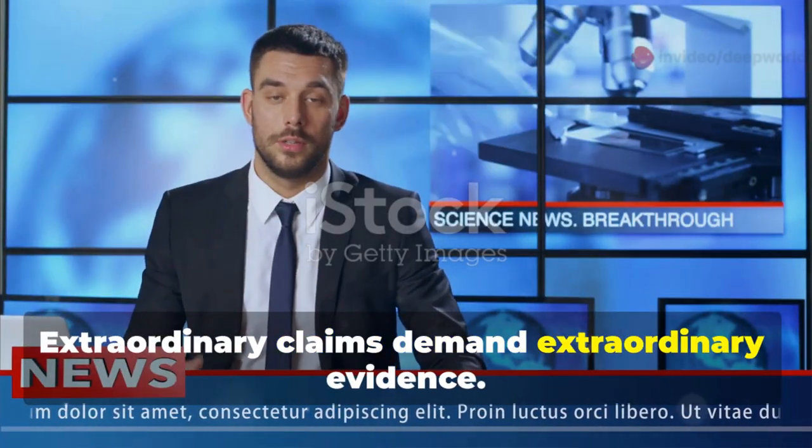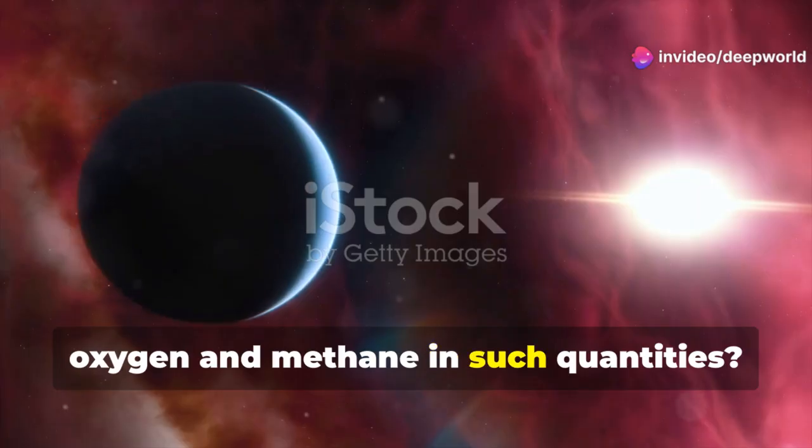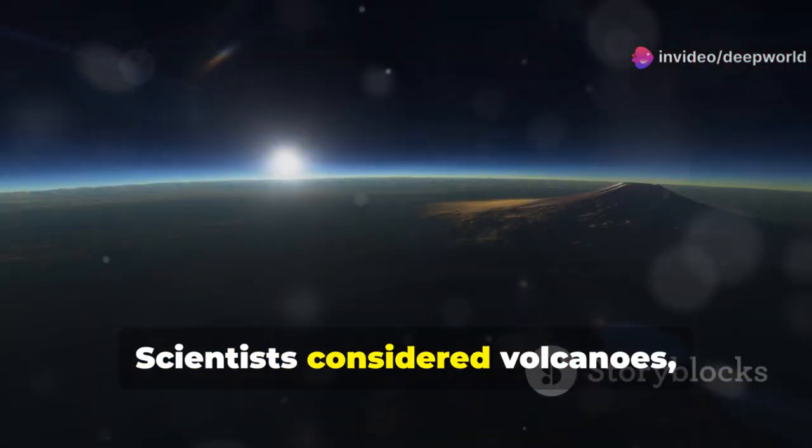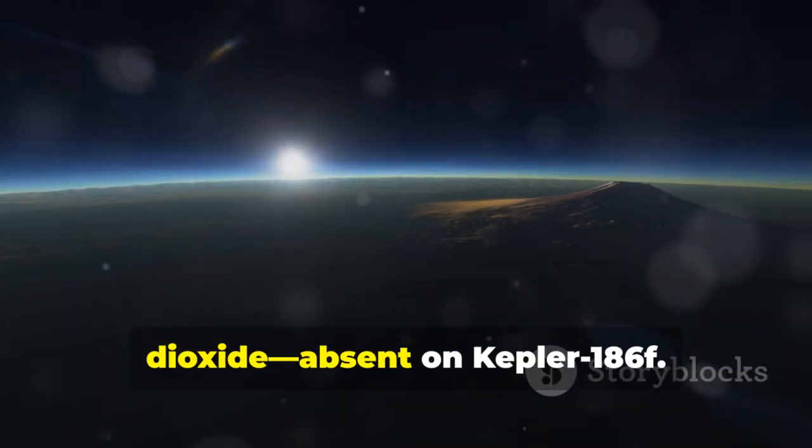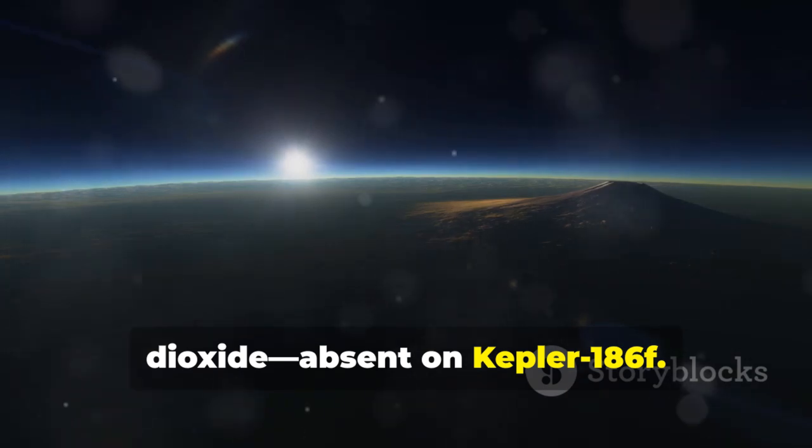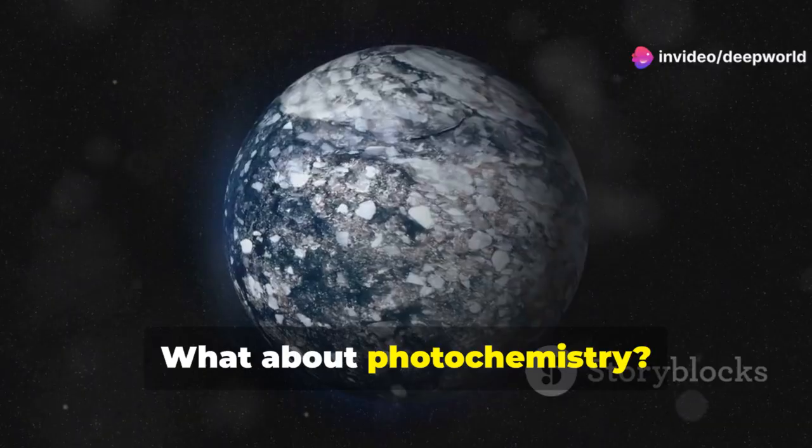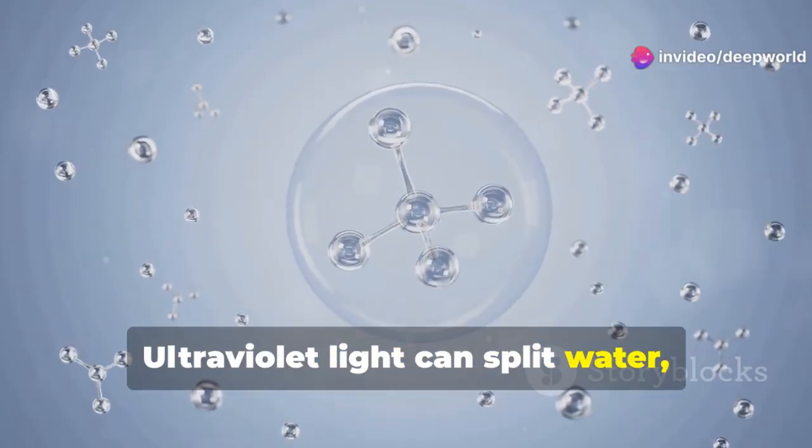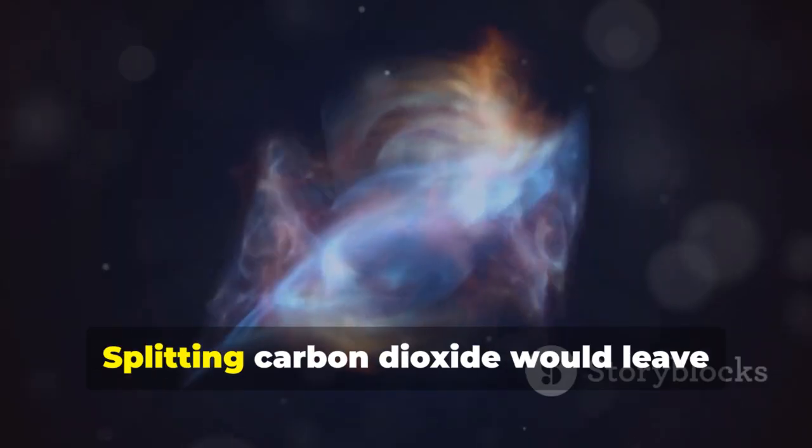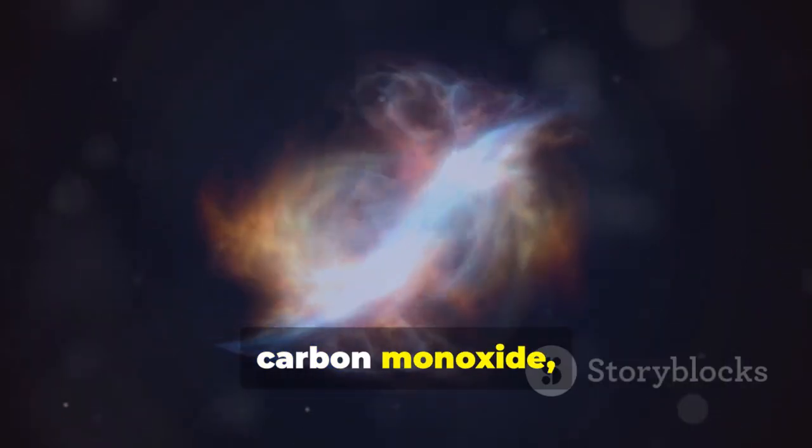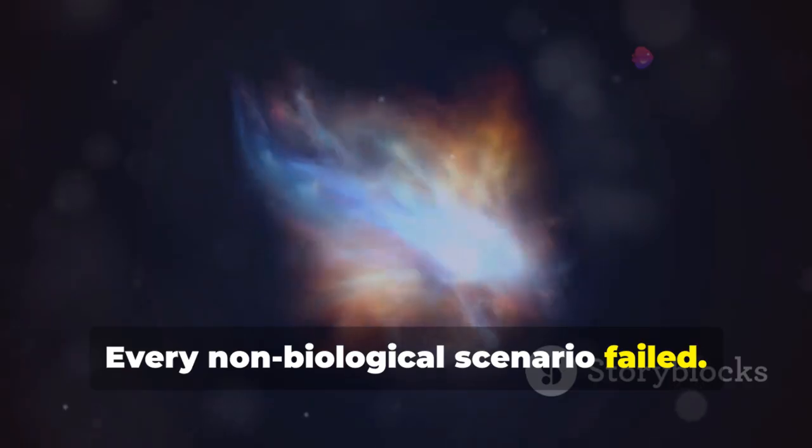Extraordinary claims demand extraordinary evidence. Could geology or chemistry explain both oxygen and methane in such quantities? Scientists considered volcanoes, but they release methane with sulfur dioxide, absent on Kepler-186f. Volcanoes also don't produce free oxygen. What about photochemistry? Ultraviolet light can split water making oxygen, but not enough, and it doesn't make methane. Splitting carbon dioxide would leave carbon monoxide, which wasn't detected. Every non-biological scenario failed.